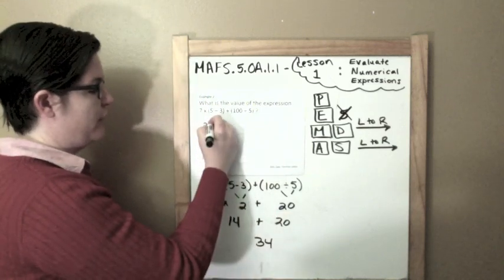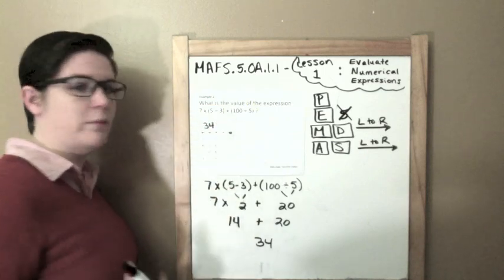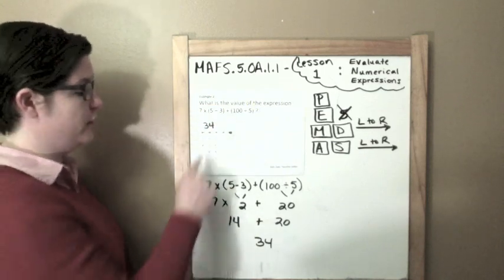14 plus 20, now that's my addition step. And all that I have left would be 34. So in my equation editor, I'm going to write in 34. But, again, you'll take a computer-based test and you would punch in 34.